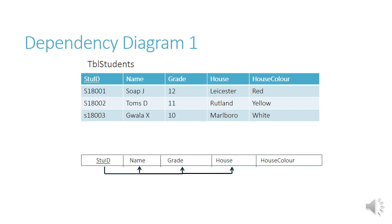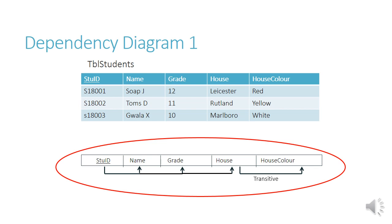House color is dependent on house, so we put an arrow going from house to house color, and underneath it we write 'transitive' to qualify what sort of dependency it is. This whole diagram is called a dependency diagram.